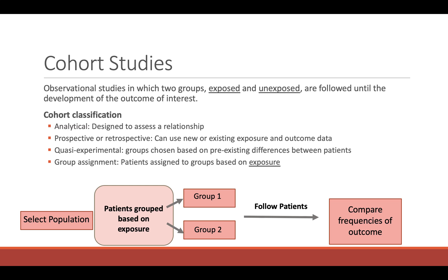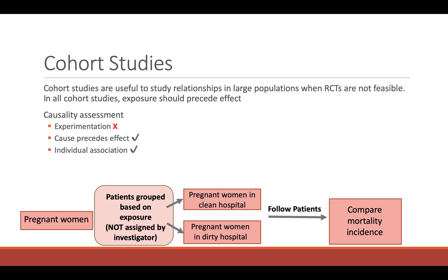However, patients are assigned to groups based on exposure. Cohort studies, like case controls, are useful to study relationships in large populations when RCTs are not feasible. In all cohort studies, exposure should precede the effect.